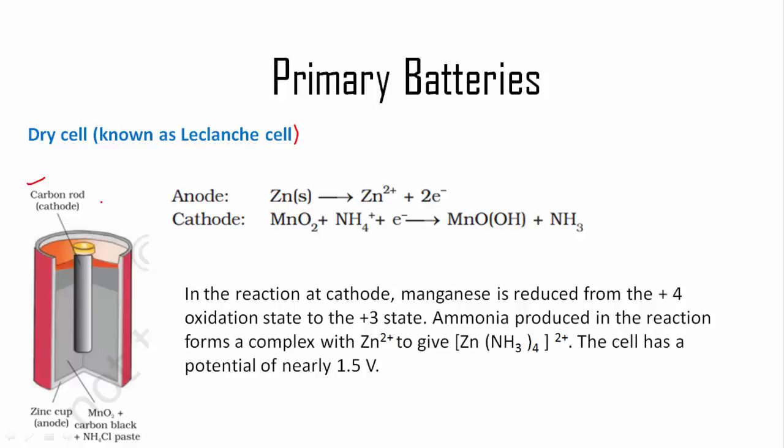At the anode, zinc is oxidized into Zn²⁺ with release of two electrons. At the cathode, MnO₂ and NH₄Cl are present. MnO₂ and NH₄Cl take one electron and get converted into a complex, MnOOH plus NH₃.